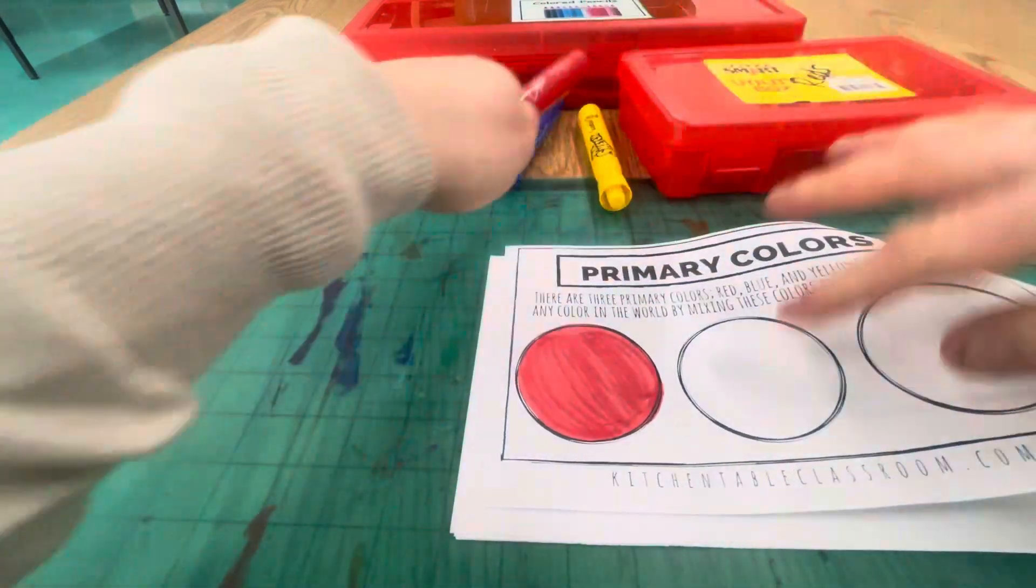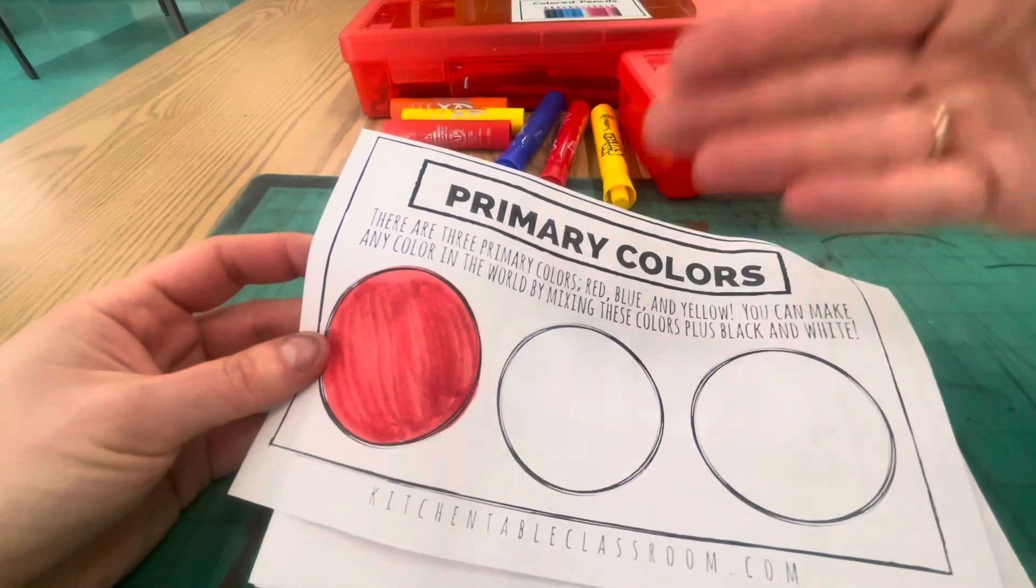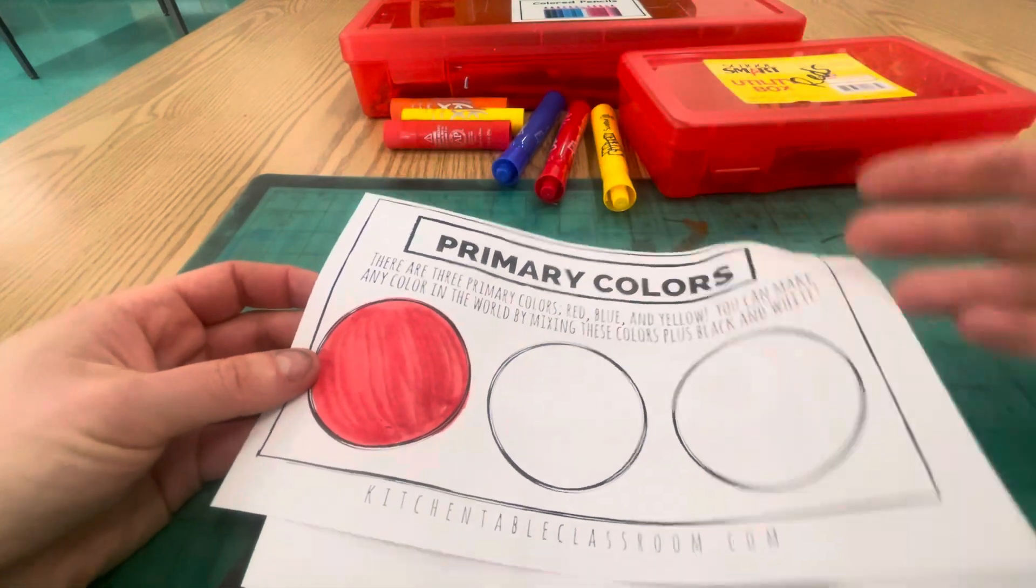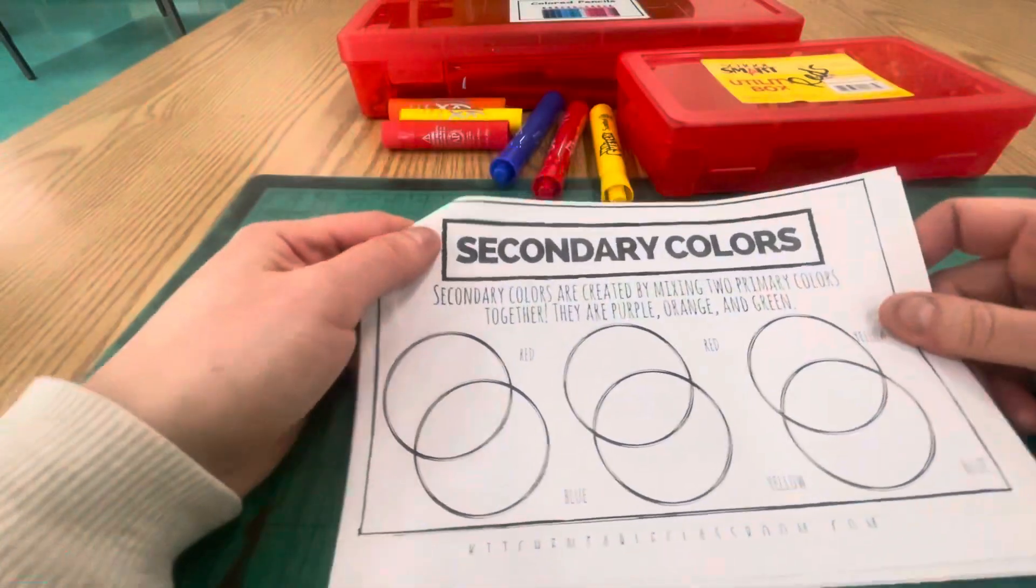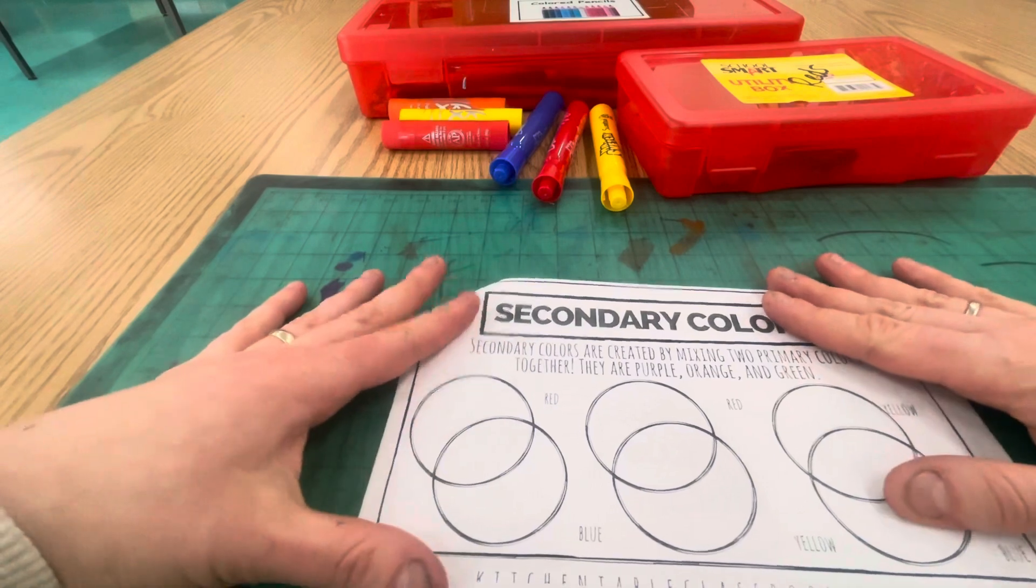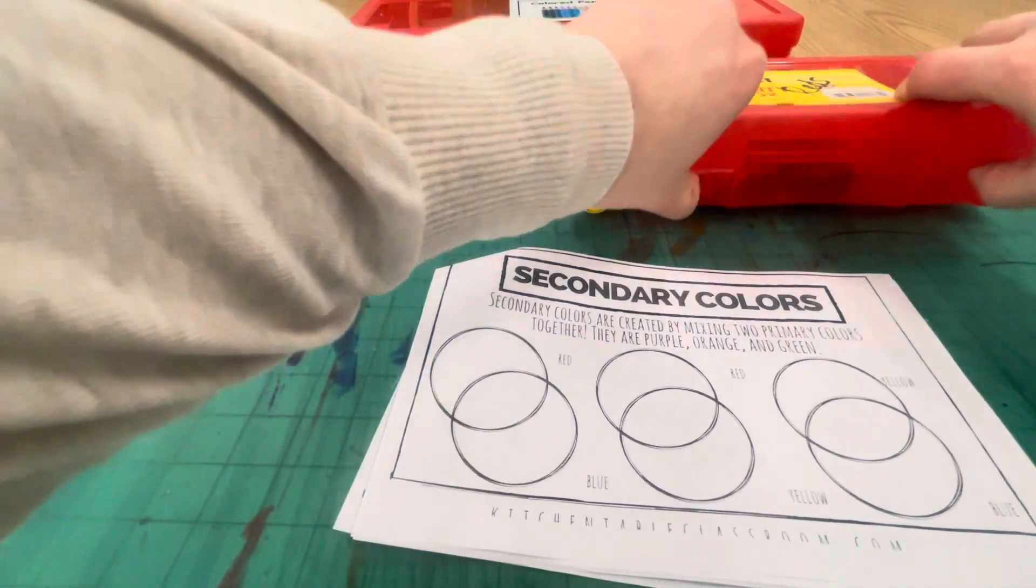You could fill those in and you could even use different color materials if you want. Marker for the red, paint stick for the yellow, and colored pencil for the blue, that's up to you. For this particular exercise where you're mixing colors together, please use colored pencils or crayons.